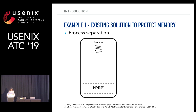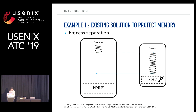To prevent this kind of attack, one existing solution is process separation. Assuming this process is the web server, it will make a new process for every incoming client request. Then the user's private key will be located in the memory of the separated process. So in this case, if the main process has a bug, it cannot access the private key in the separated process.